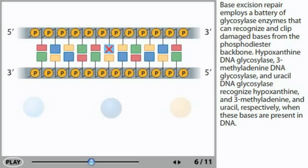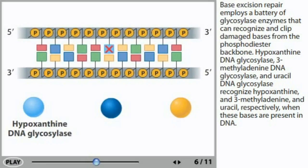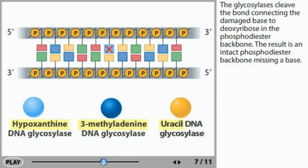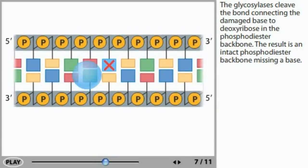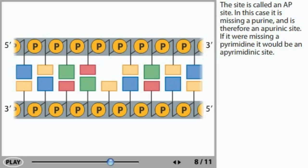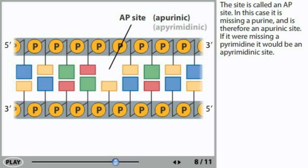Base excision repair employs a battery of glycosylase enzymes that can recognize and clip damaged bases from the phosphodiester backbone. Hypoxanthine DNA glycosylase, 3-methyladenine DNA glycosylase, and uracil DNA glycosylase recognize hypoxanthine, 3-methyladenine, and uracil respectively when these bases are present in DNA. The glycosylases cleave the bond connecting the damaged base to deoxyribose in the phosphodiester backbone. The result is an intact phosphodiester backbone missing a base — the site is called an AP site. In this case, it is missing a purine and is therefore an apurinic site. If it were missing a pyrimidine, it would be an apyrimidinic site.